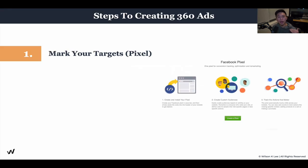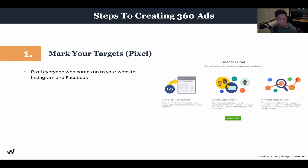The first step is to pixel them. What does it mean to pixel them? It means that you're marking them whenever they come and arrive on your website, whenever they engage on your Facebook or Instagram, whenever they click a like, comment, or just visit your website — you have marked them. That way, you can actually show your ads to them. That's what it means to pixel them.